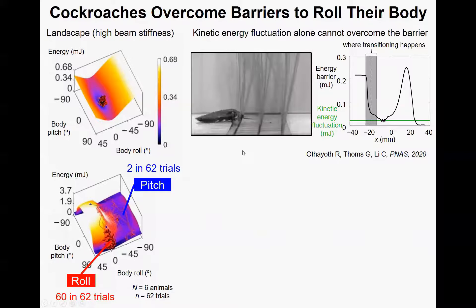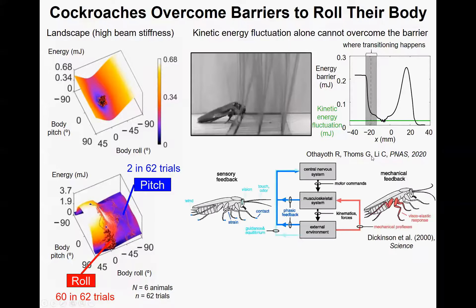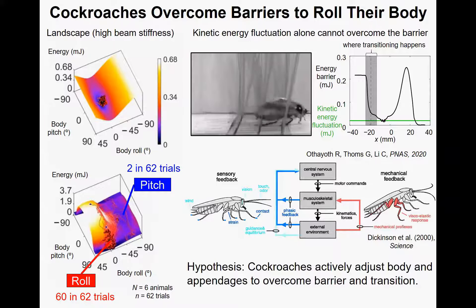However, for the animal, although the kinetic energy fluctuation is comparable to the barrier, the animal already transitioned before the potential energy barrier had reduced below the kinetic energy fluctuation level. This suggests that the animal must do something active to enhance transitioning. It is well known that besides passive mechanical interaction, the animal can also make active adjustments using sensory feedback. So we hypothesize that the cockroach actively adjusts its body and appendages to overcome the barrier and transition.